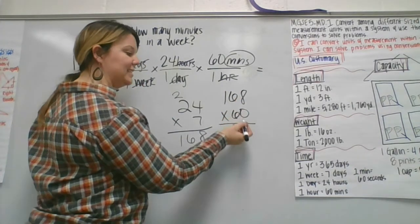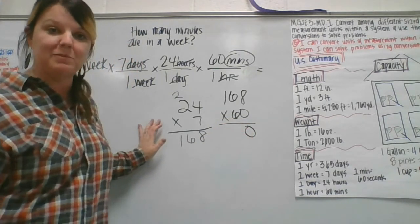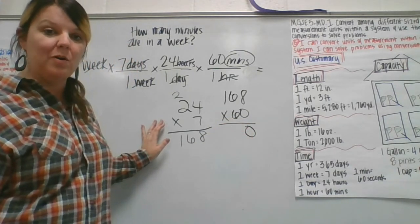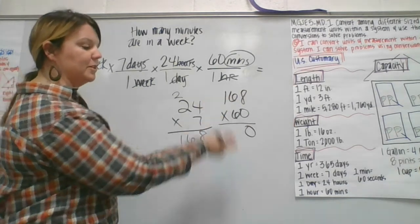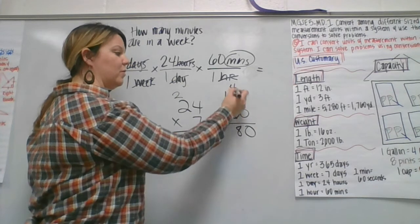168 times 60. That's a zero. I understand place value, so I know that I can just make my answer 10 times larger by placing that zero in my answer. And now I can just multiply these numbers times six. Six times eight is 48. Eight goes here, carry the four.